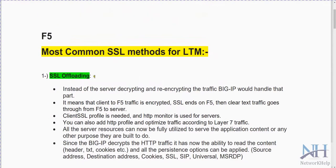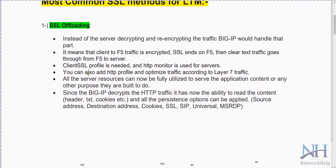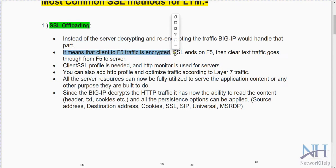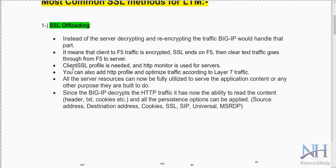The first method is SSL offloading. Instead of the server decrypting and re-encrypting the traffic, the Big-IP handles that part. This means that client to F5 traffic is encrypted via SSL, and from F5 to the server the traffic goes as clear text. A client SSL profile is needed and an HTTP monitor is used for the server.